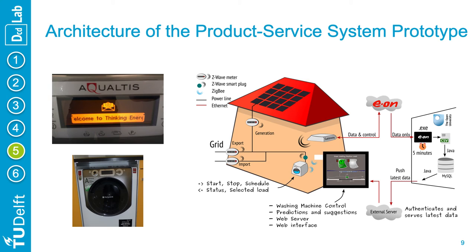The architecture looked like this: the connected washing machine was communicating via Zigbee to an electronic tablet. This tablet was interacting with a server, getting updated with the latest data from the home energy system and the weather forecast. Combining this information with the selected washing cycle, a program on the tablet was regularly running our demand-shifting algorithm to update and start the washing machine at the best time within the user constraints.